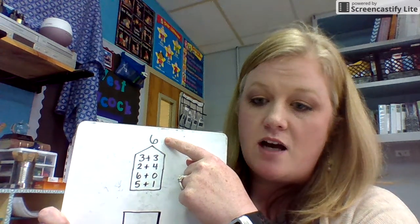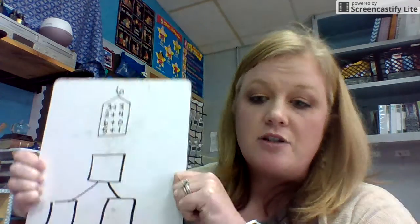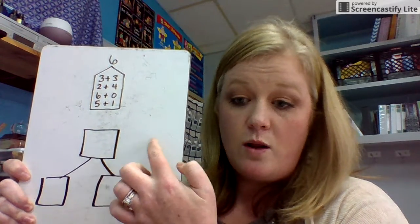So if we had six at the top, we had the different numbers that would make up six. Essentially, that's what a number bond is. You have the whole at the top.